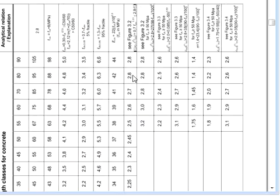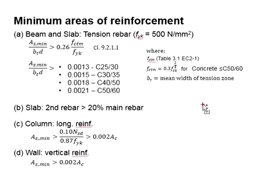At the end of the row, there are equations to show you how to obtain fctm. For concrete strength less than 50, these equations can be used.